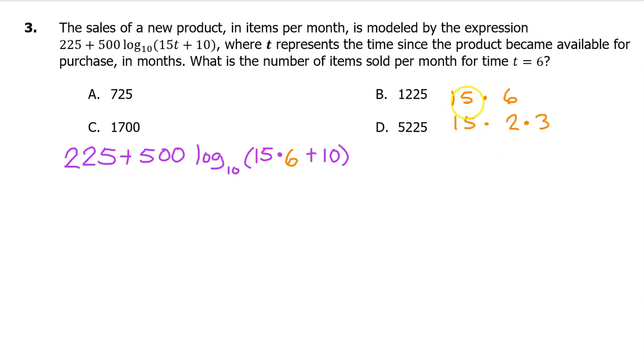Here is another way. 15 times 6 is the same thing as 15 times 2 times 3. 15 times 2 is 30, so now we have 30 times 3, which is 90.